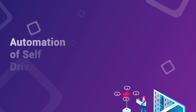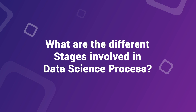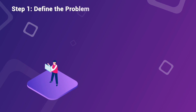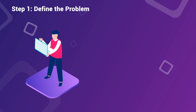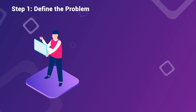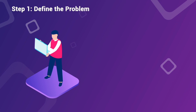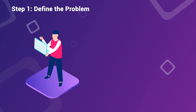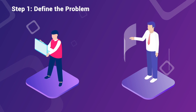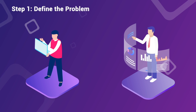Now let's see what are the different stages involved in the data science process. Step 1: Define the problem. Before you get into data, you need to first define what your business problem is — what you are trying to achieve and what are the different parameters on which your end results depend.